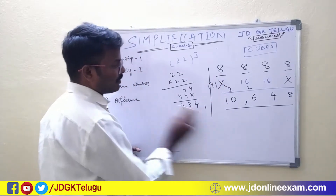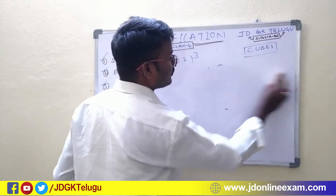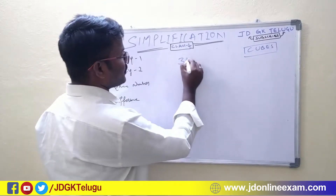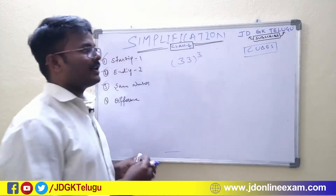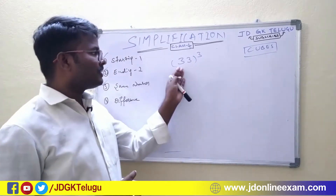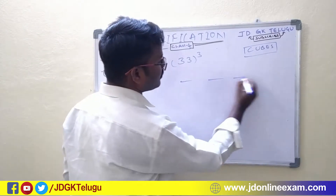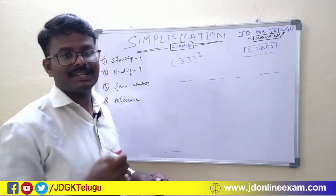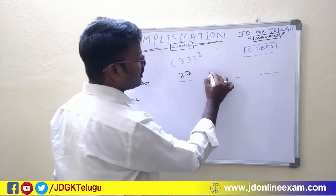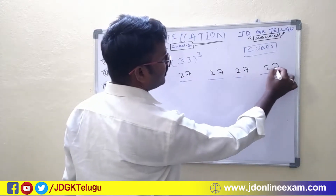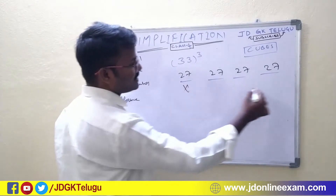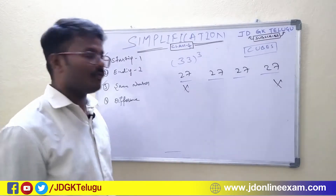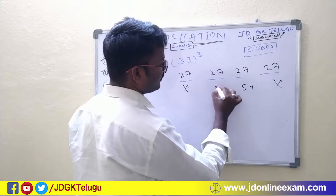For example, 3 cube is very easy. So 33 cube is very easy — 3 cube is very simple, 4 digits. 3 cube gives 27, 27, 27, 27. The first digit and last digit are very easy. 27 is very easy. What is the difference? 54, 54.